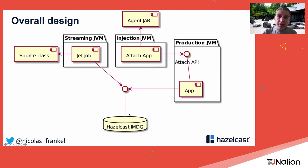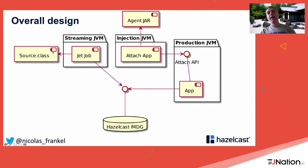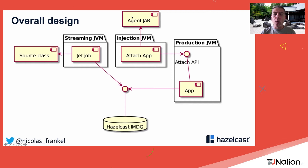With all three parts in place, here is the architecture: the production JVM runs my app and exposes the Attach API. A Jet job reads class changes from my local file system and pushes them to Hazelcast IMDG — a giant hashmap of class names to bytecode. Then the injection JVM pushes the agent jar to the production JVM, and the agent subscribes to changes in the IMDG and redefines the running bytecode.